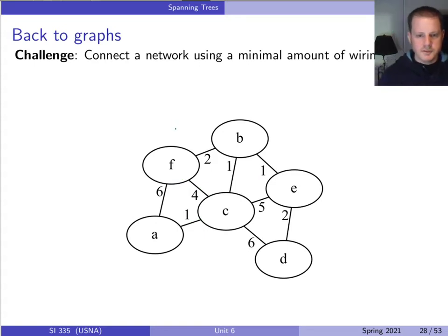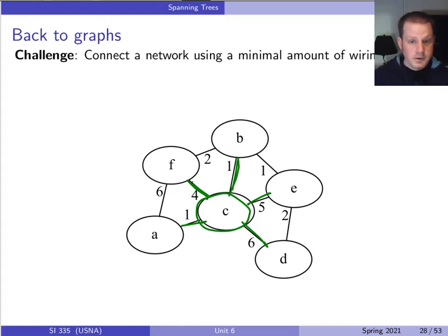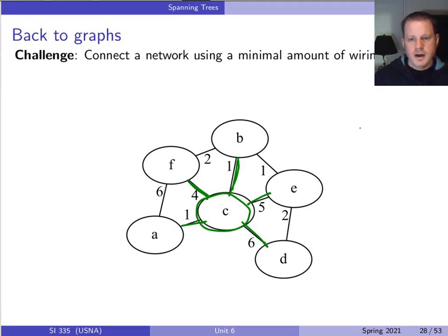For example, we might think of making c a central hub and connecting everything through it. That gives us all nodes connected — f and b aren't directly linked but are indirectly connected, which is fine. The total weight of that hub-and-spoke solution is 1 + 6 + 6 + 5 = 17 (or similar). But is 17 the best possible?